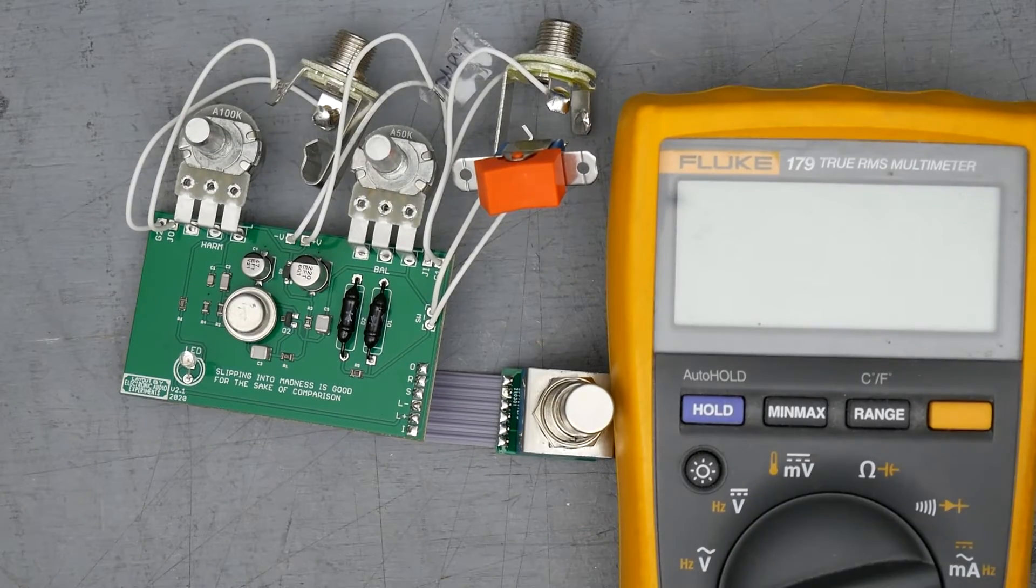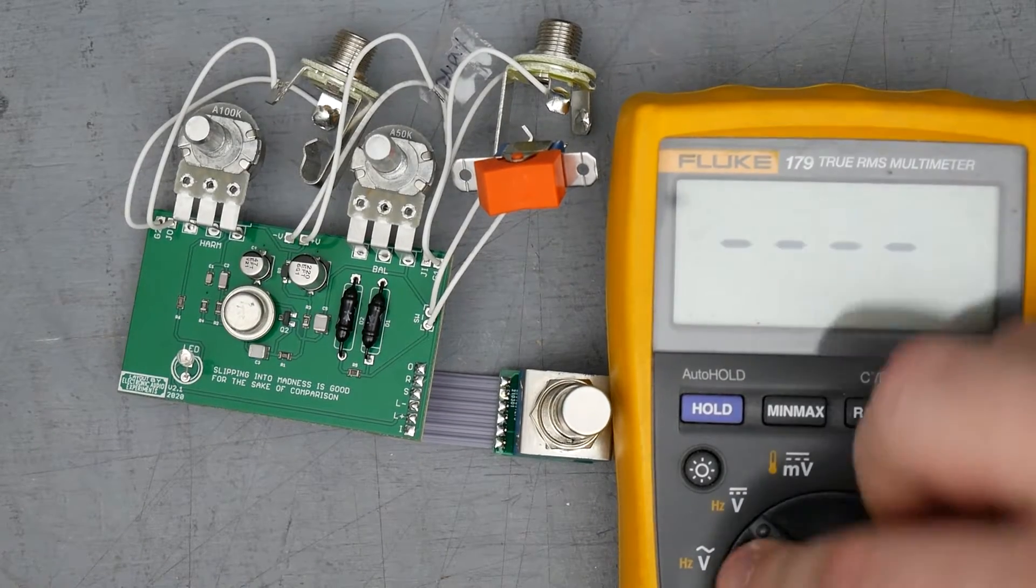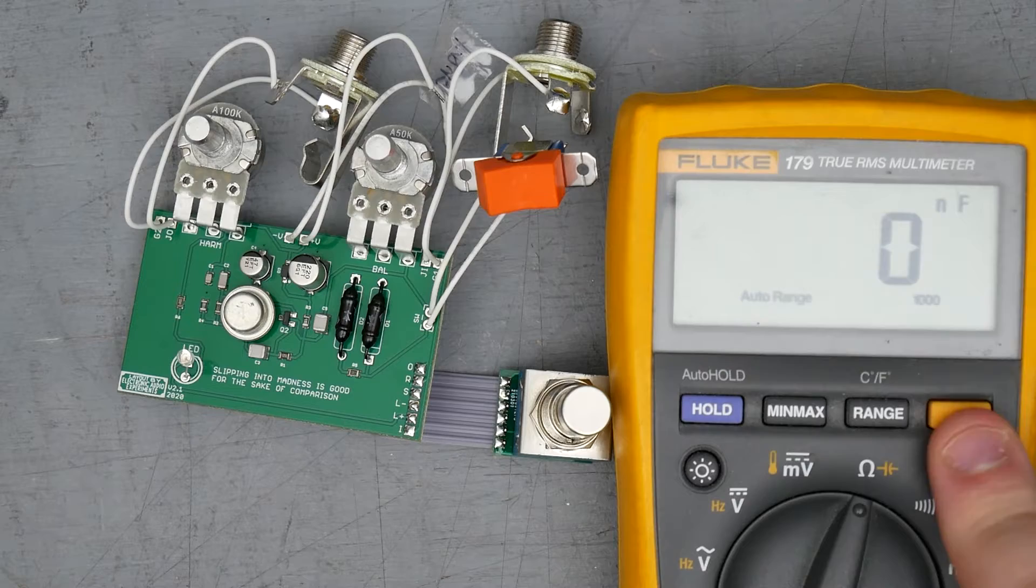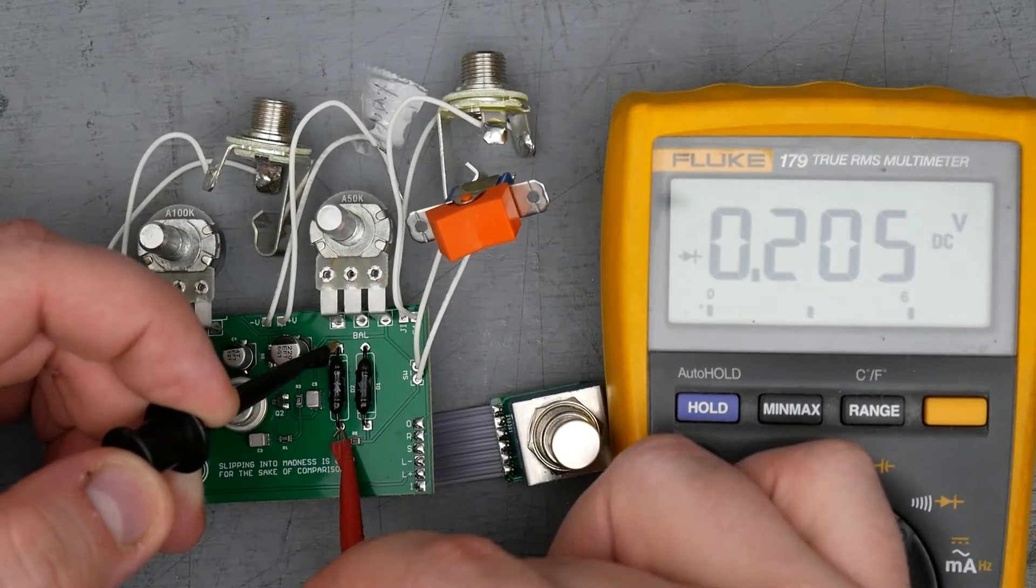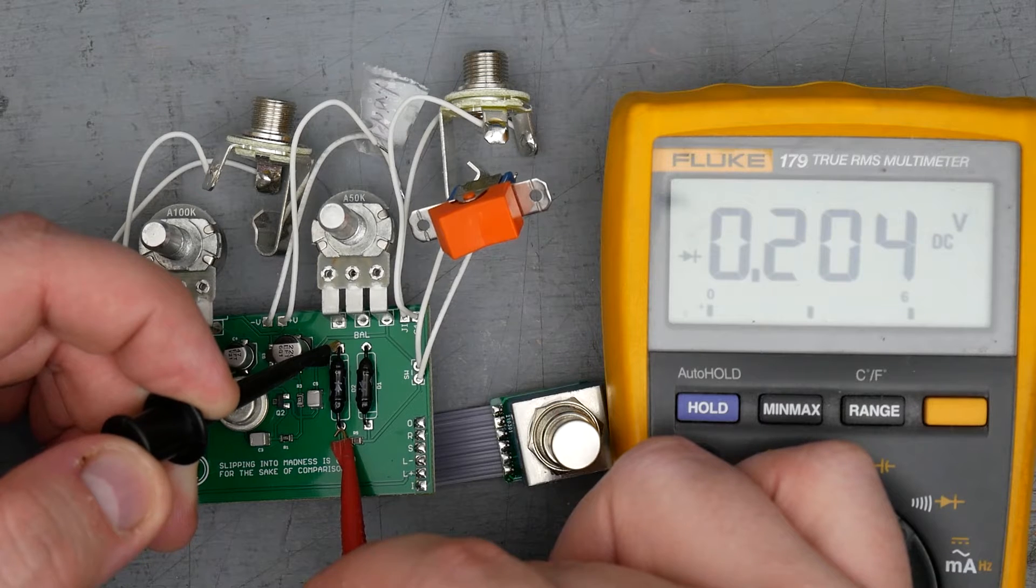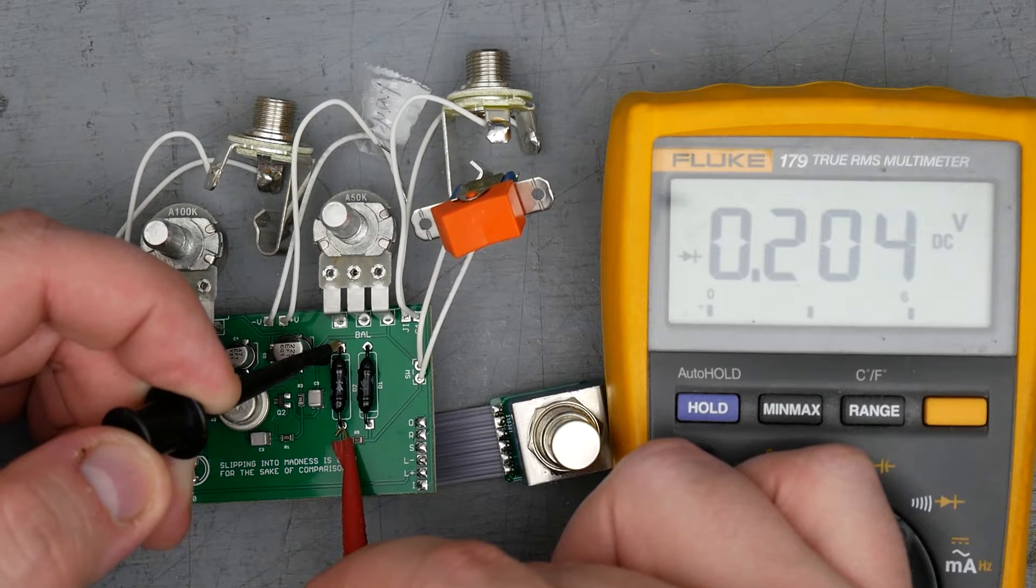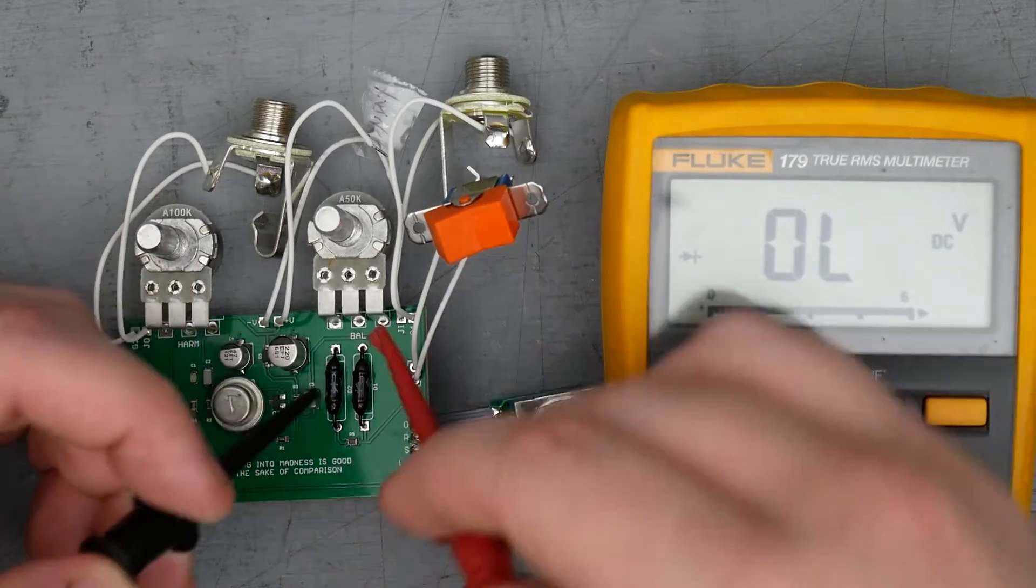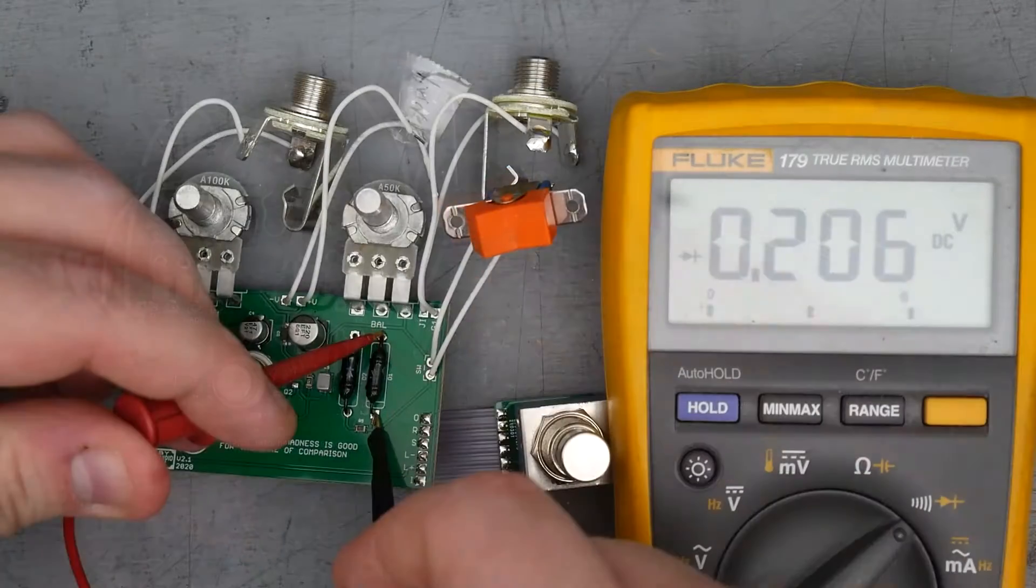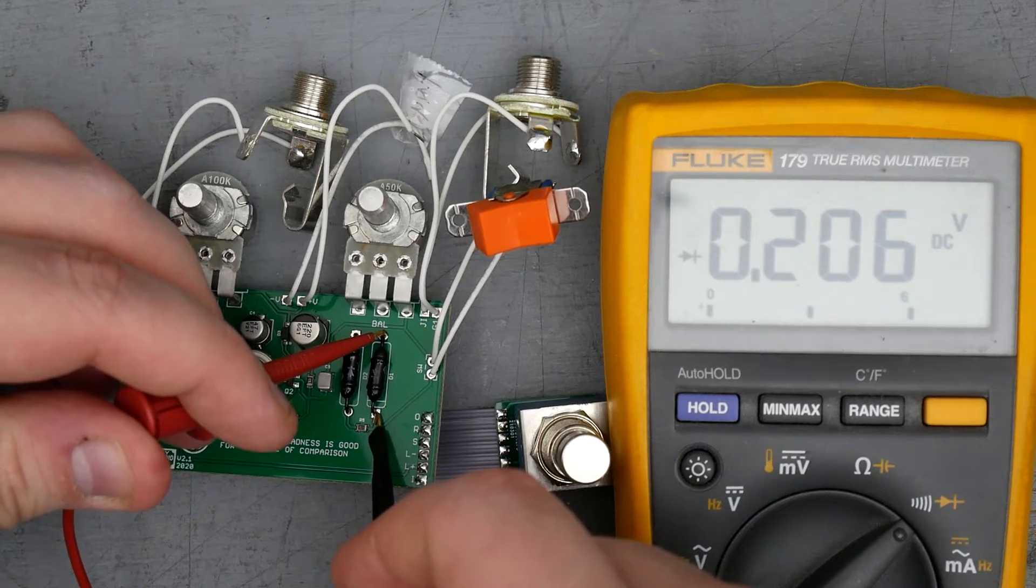So let's check and see what the forward voltage is on the clipping diodes. So put my meter in diode mode, out of the cathode. So the diode on the left is reading about 0.2 volts forward voltage. Diode on the right is approximately the same, 0.2 volts.